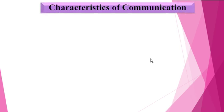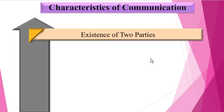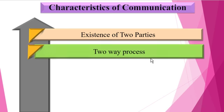Now we are going to understand the characteristics of communication. The first characteristic is the existence of two parties. Communication involves at least two parties — a sender and a receiver. The sender or communicator wants to speak, write, or issue some instructions, while the receiver receives and listens to the message. The second characteristic is that communication is a two-way process — it is not completed unless the receiver understands the message properly and sends back his response. For example, if Mr. Y delivers a lecture in Hindi to Americans who do not understand Hindi, the communication process will fail.